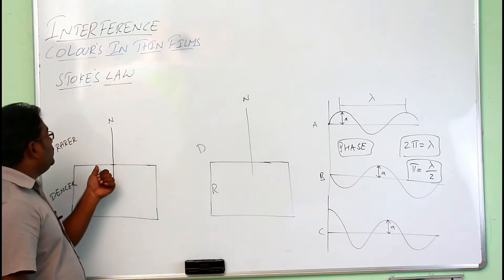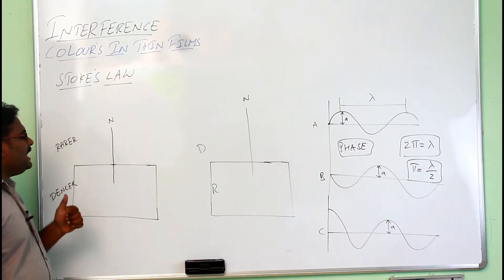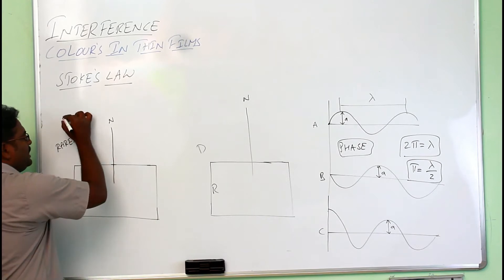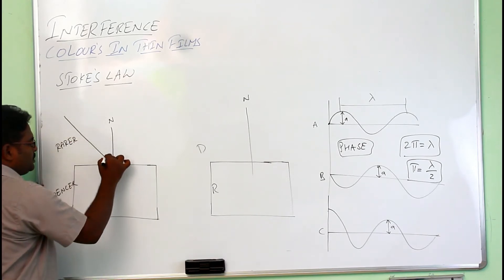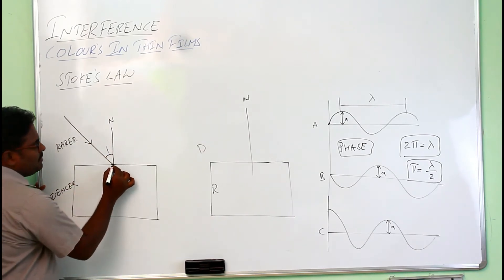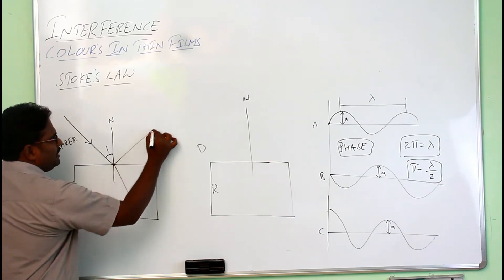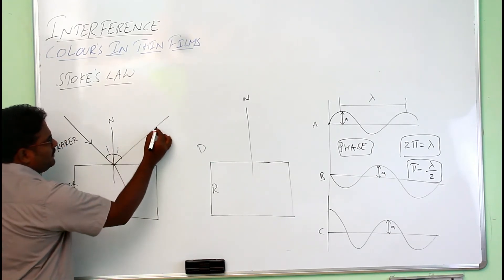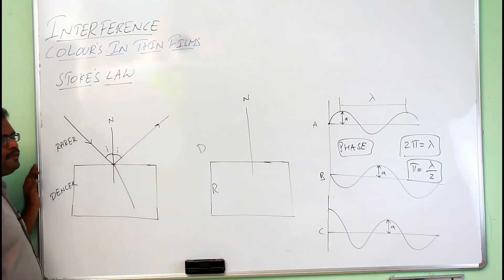And now, Stokes law. When a light ray is reflecting from the surface of a denser medium, suppose if you incident a light ray like this, this is angle of incidence made by the incident light ray with the normal. Some part will get refracted and some part will be reflected. This is also angle of incidence i, where angle of incidence equals angle of reflection.